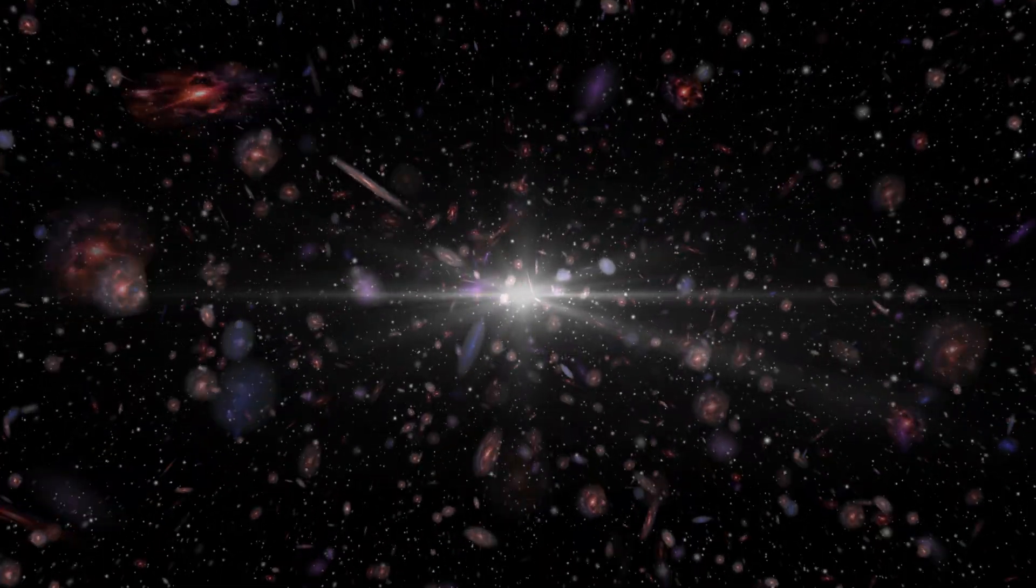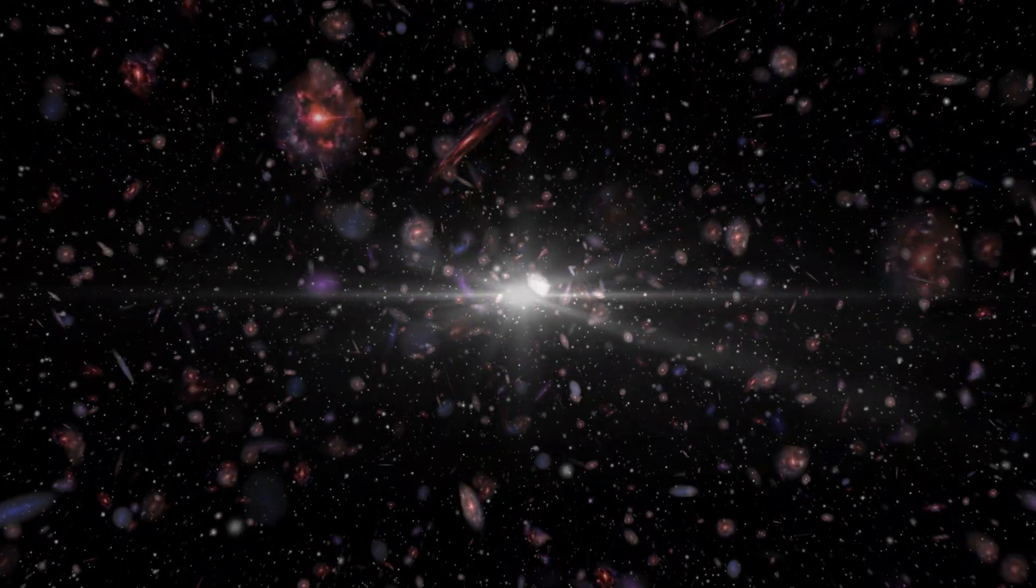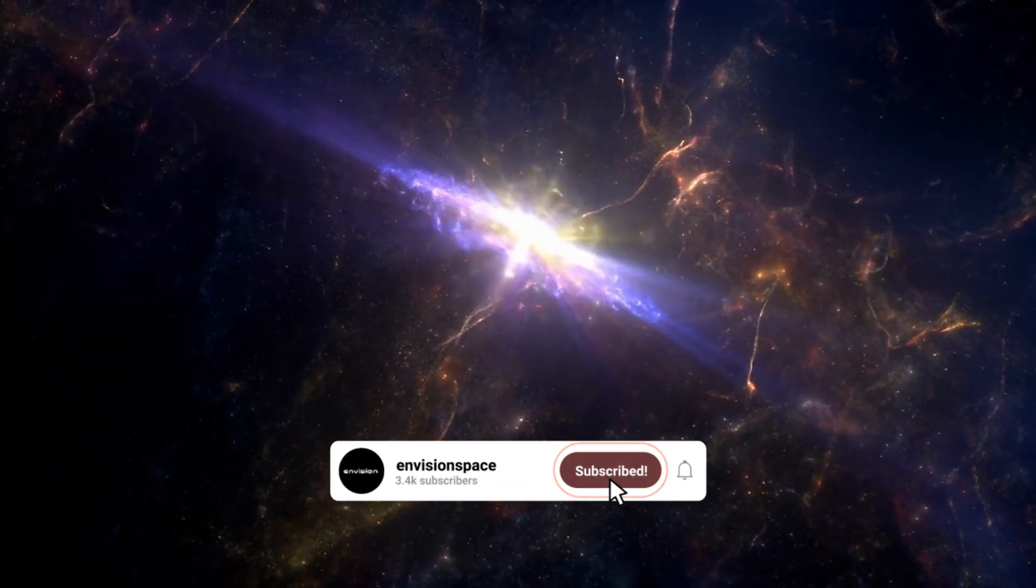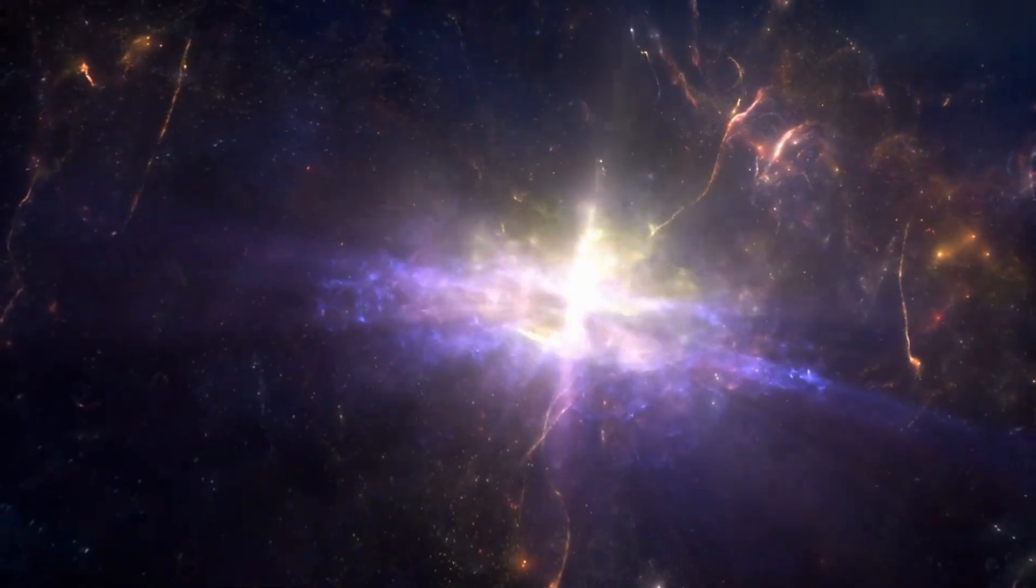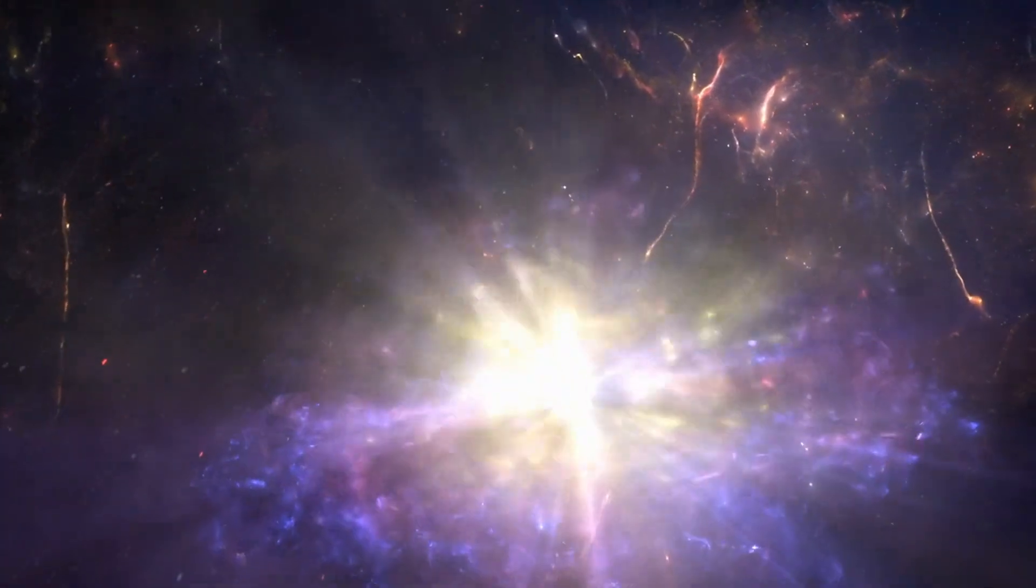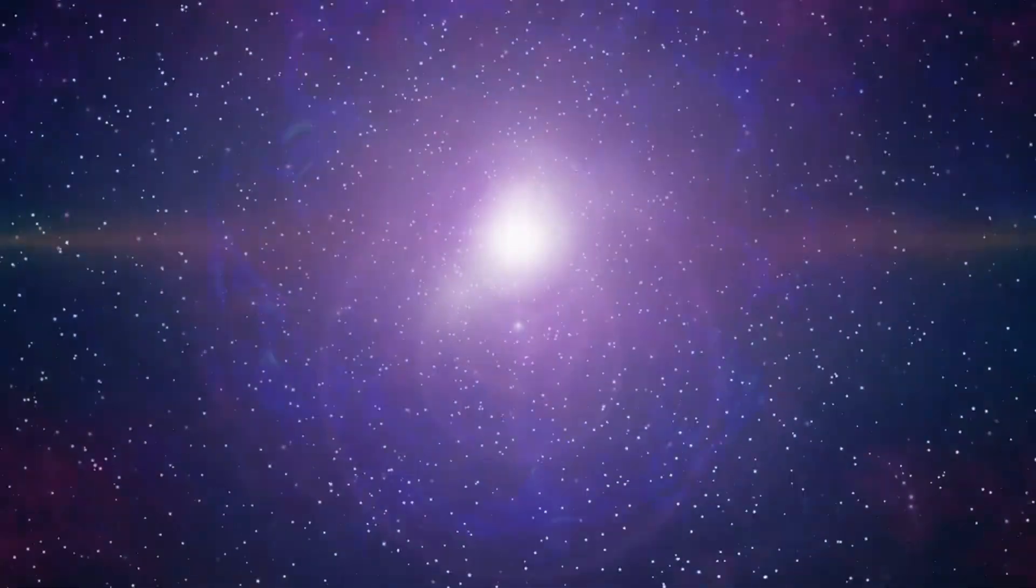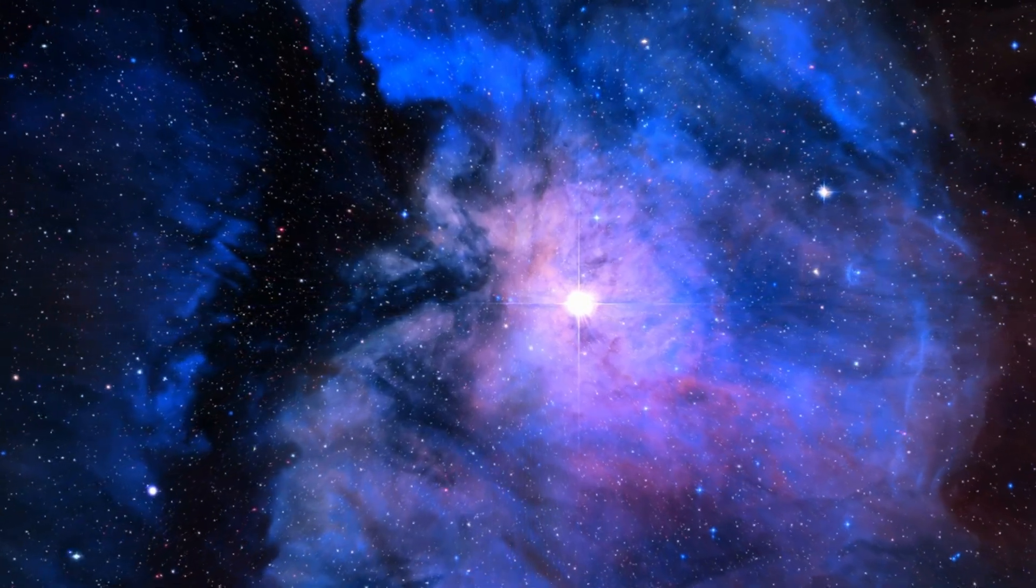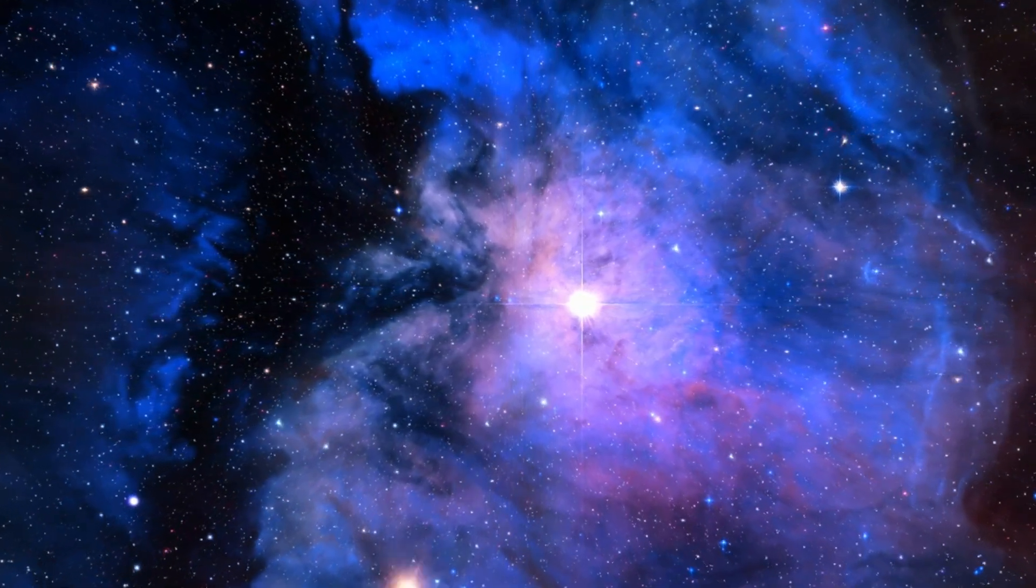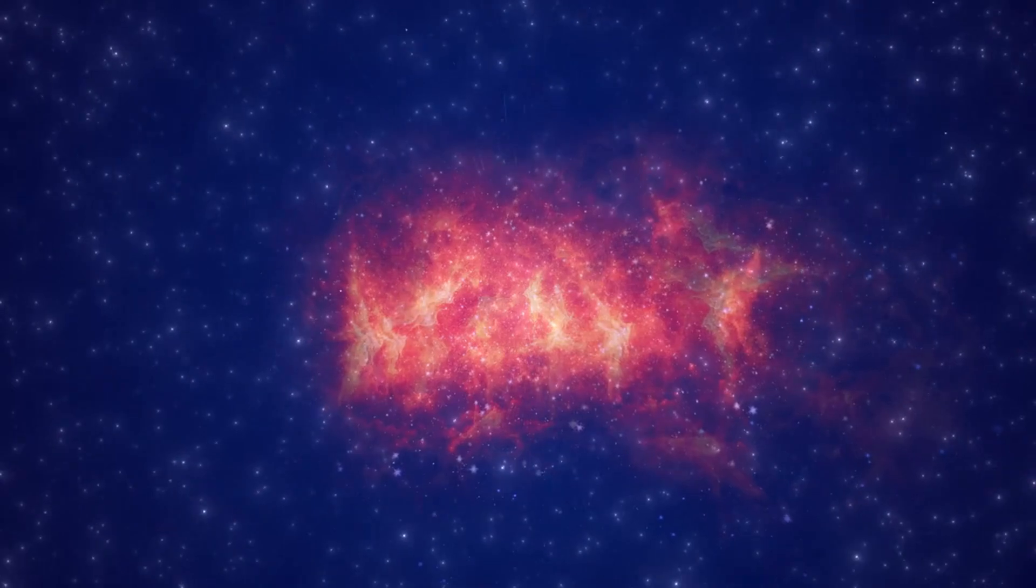Another intriguing feature of the Firefly Sparkle Galaxy is its companion galaxy, which is also at the same redshift and is located at a projected distance of about 2 kiloparsecs or 6,500 light-years away from the Firefly Galaxy. This companion galaxy is smaller and fainter than the main galaxy, with a mass of about 1 billion solar masses and a size of about 0.5 kiloparsecs or 1,600 light-years. It has a round shape and a red color, which indicates that it is less active in star formation.